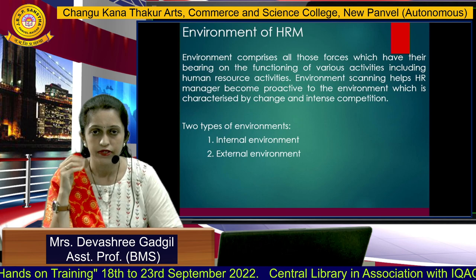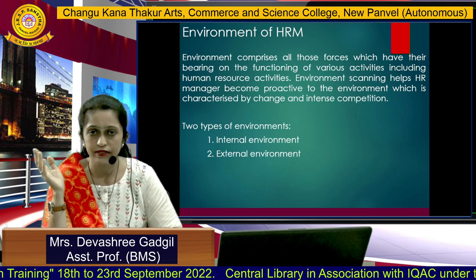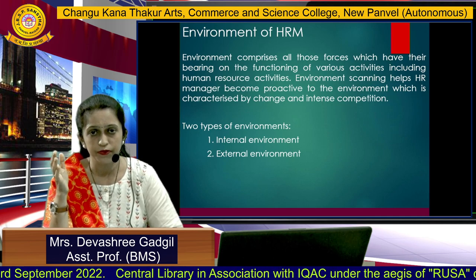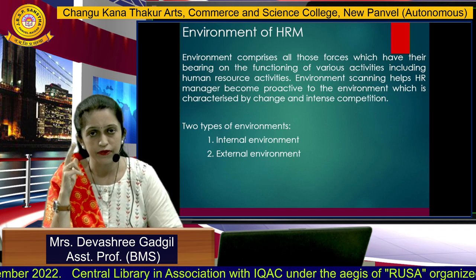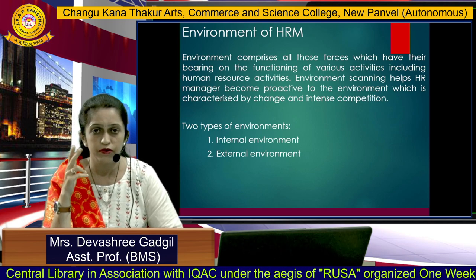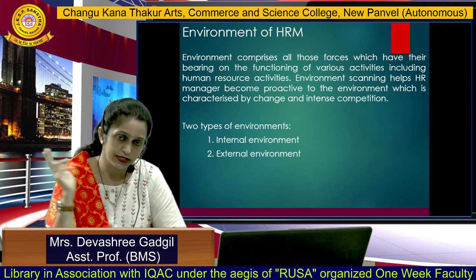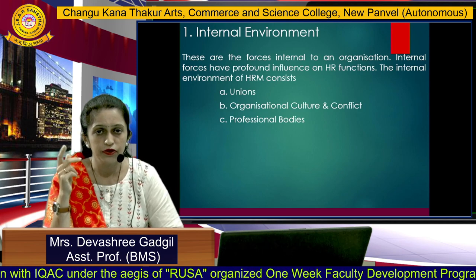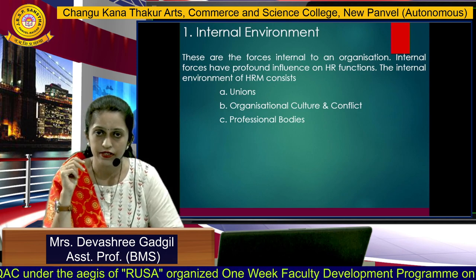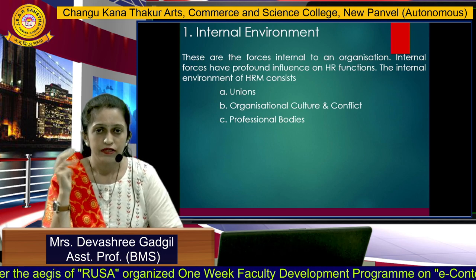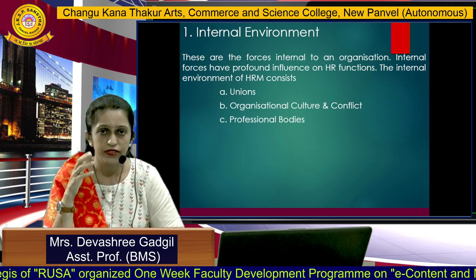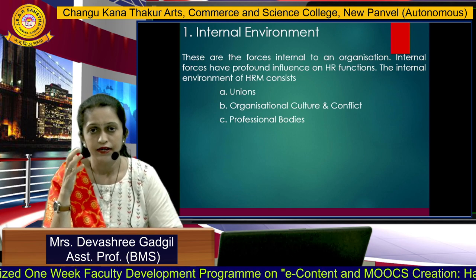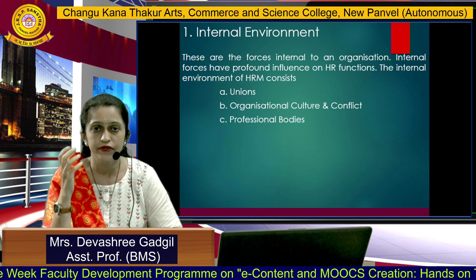The environment of HRM has two types: internal environment and external environment. When talking about human resource management, these two types of environments affect a lot. Internal environment consists of three factors: number one, unions; number two, organizational culture and conflict; number three, professional bodies. These are internal forces that have a profound influence on the HR function.